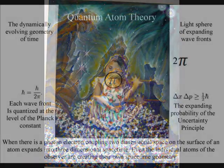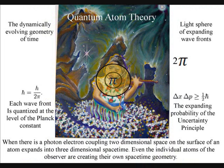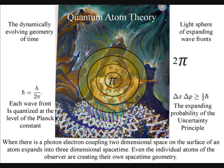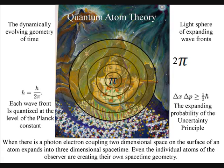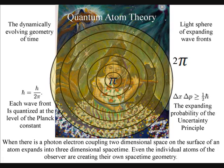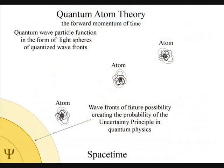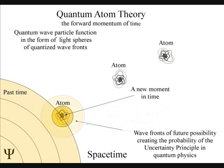We have the paradoxes of quantum mechanics because we have no fundamental understanding of the time continuum. In quantum atom theory, the emission and absorption of light or electromagnetic radiation from one atom to another creates the forward motion of time.